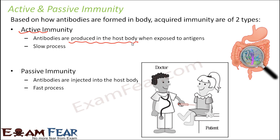For example, looking at the vaccination process — there is a process where deliberately a small amount of microbes is inserted into the body so that the body recognizes it and also produces some antibodies against it. So that is active immunity, because the antibodies are being produced inside the host body.